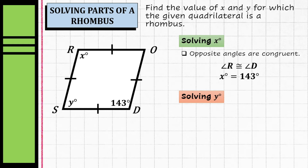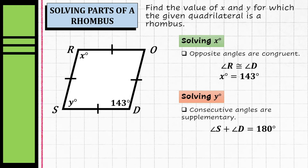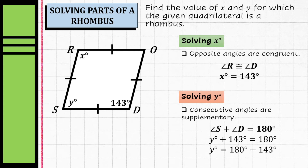Now let's solve for y using the property that consecutive angles are supplementary. Since angle D and angle S are consecutive angles, angle S plus angle D equals 180 degrees. Substituting: y plus 143 degrees equals 180 degrees. Applying the subtraction property of equality: y equals 180 minus 143, so y equals 37 degrees.